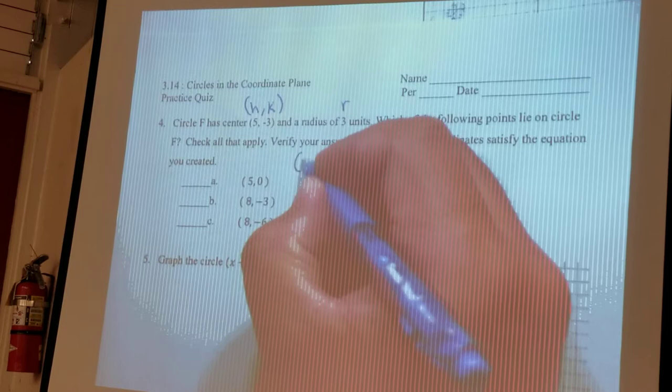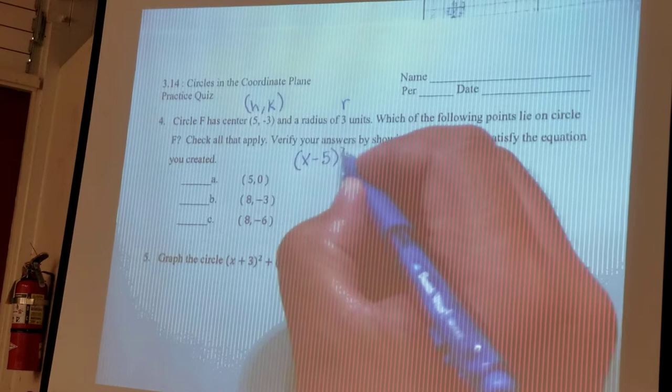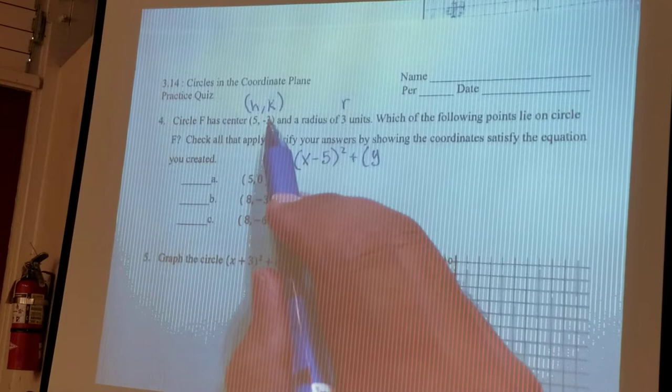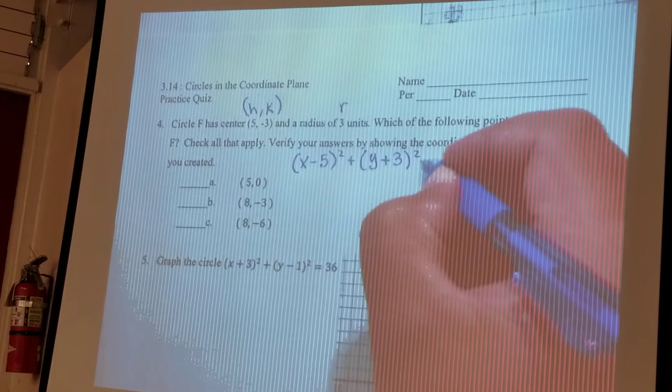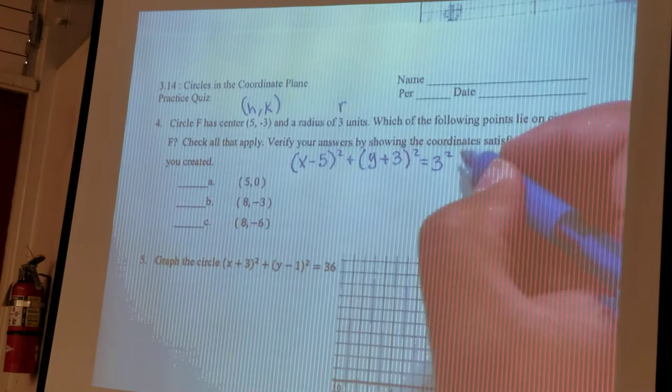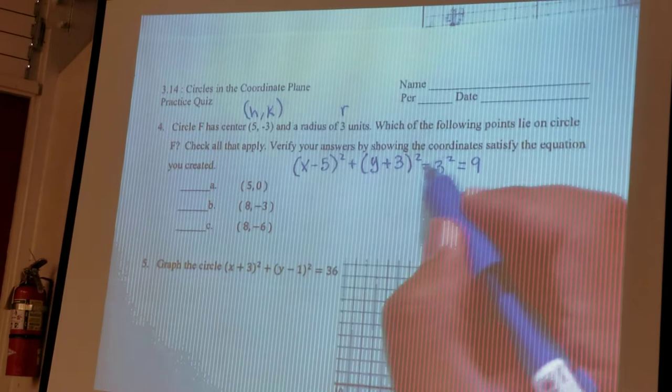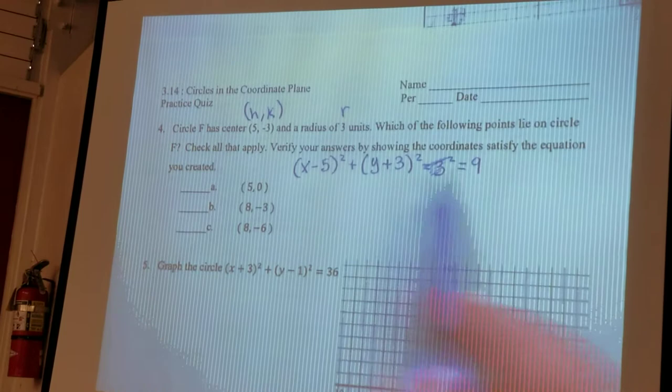So I'll write the equation right above over here. So that would be X minus H, which is 5, squared, plus Y minus K. So I'm going to say minus negative 3, which makes it a plus 3. Equals R squared, so 3 squared. Or 9, so I'm just going to put equals 9. I'm going to cross off this one. So equals 9.